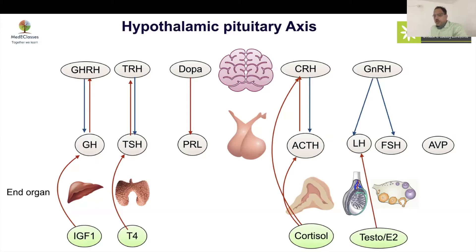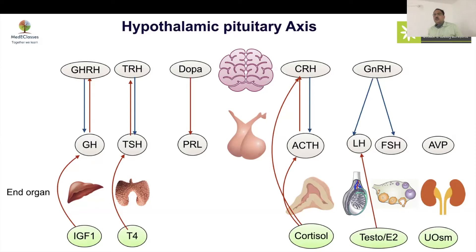LH is predominantly inhibited by testosterone in boys and progesterone in girls, while FSH is regulated more by inhibin levels. The AVP axis controls urinary osmolality. This entire hypothalamic-pituitary axis controls every aspect of development — growth, temperature, lactation, stress response, blood pressure, glucose, pubertal development, and osmolality.